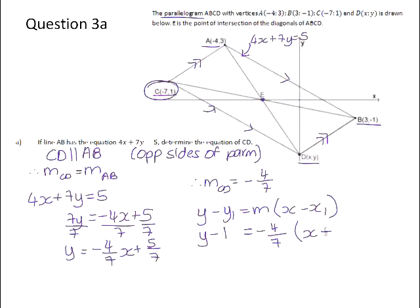If you then tidy this up, you get negative 4 over 7X. Negative 4 over 7 times 7 is negative 4. Negative 4 add 1 is negative 3. So therefore, the equation of CD is negative 4 over 7X minus 3.